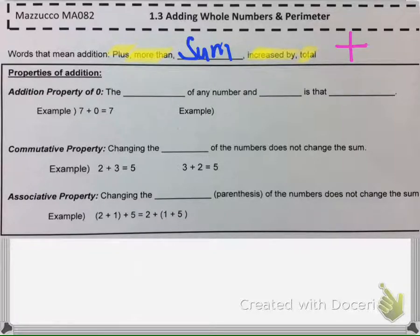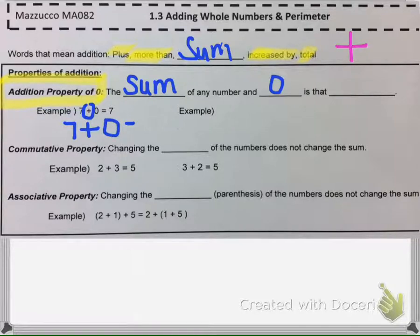The first property is called the addition property of zero, and it says the sum of any number and zero is that number. For example, 7 + 0 = 7. You can put plus zero to anything and it's still the same.